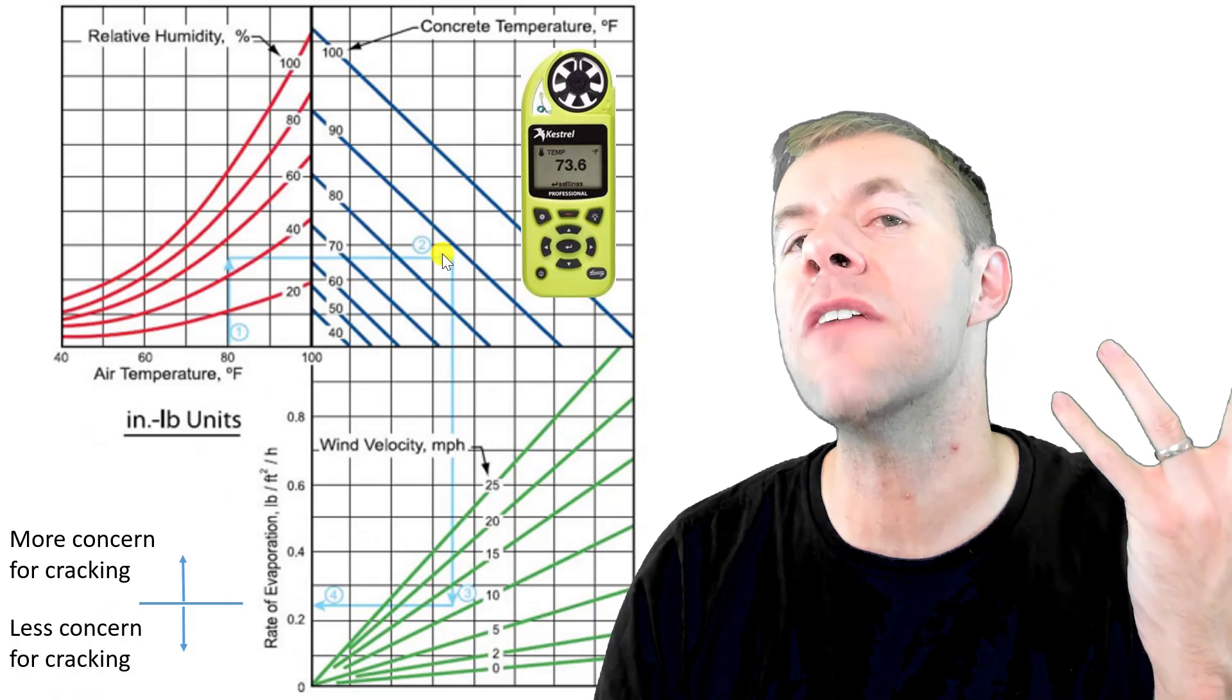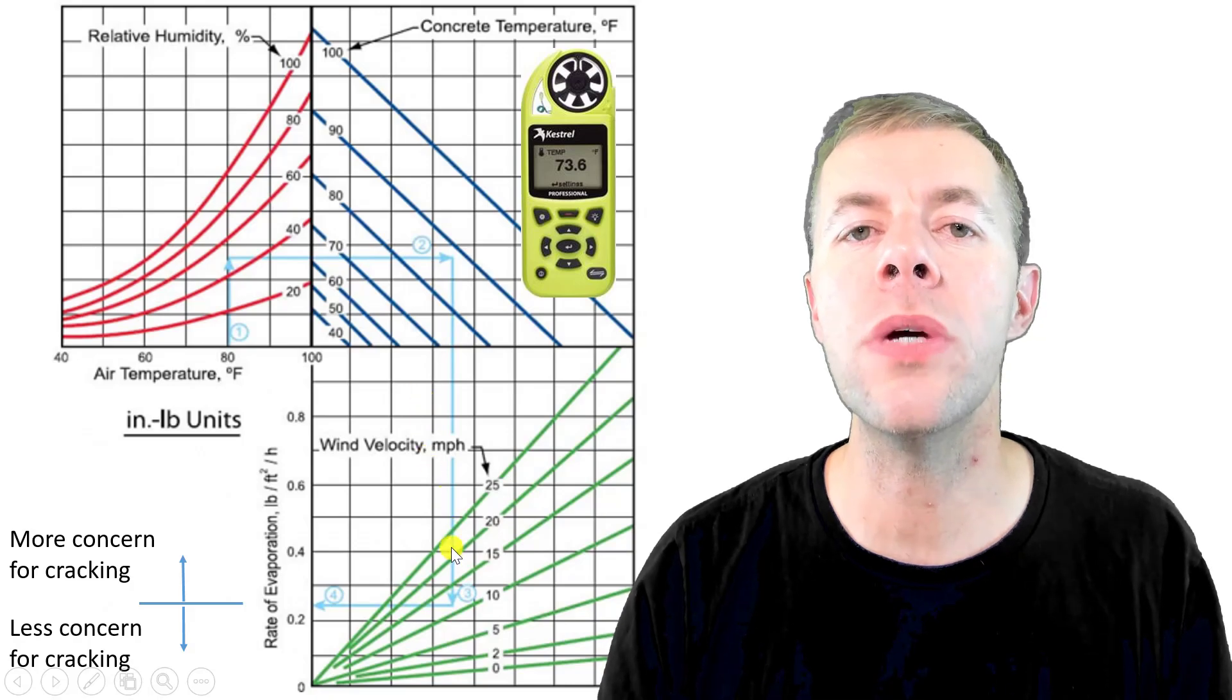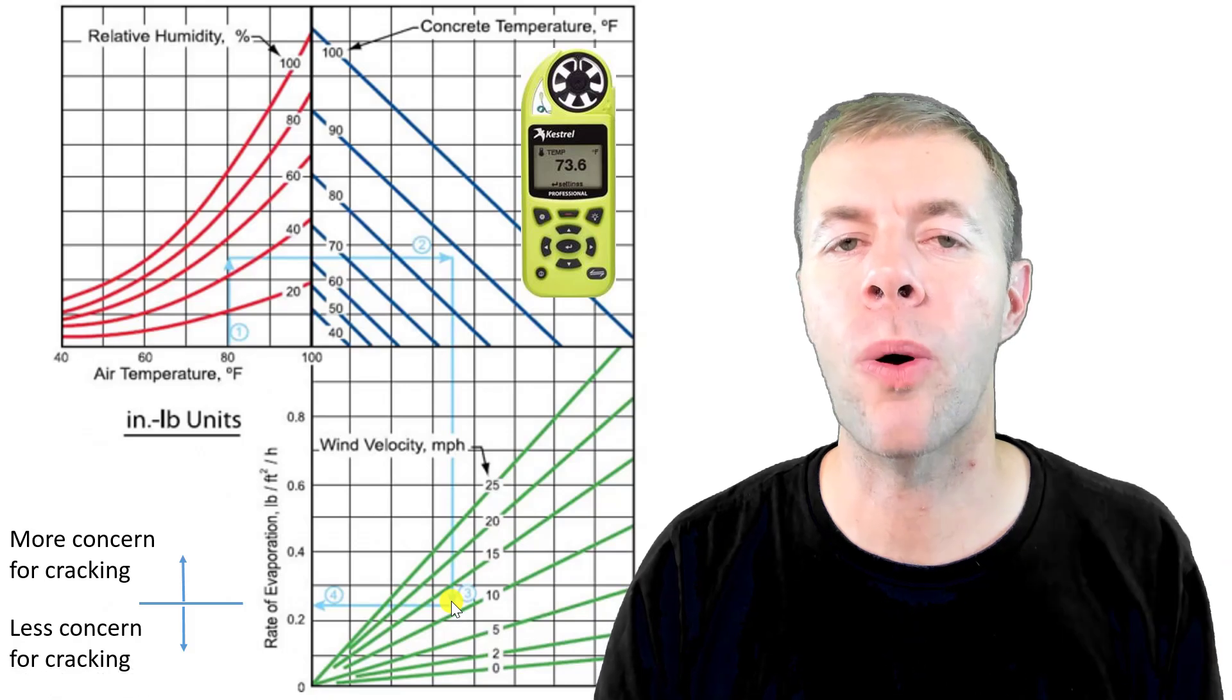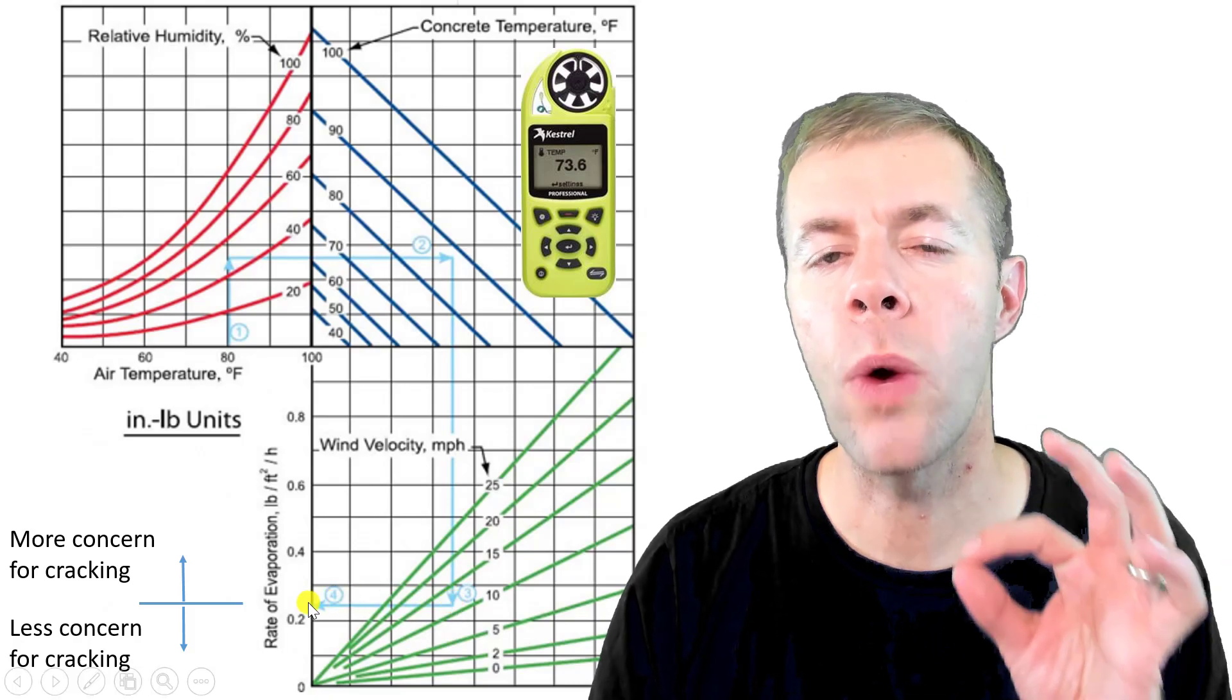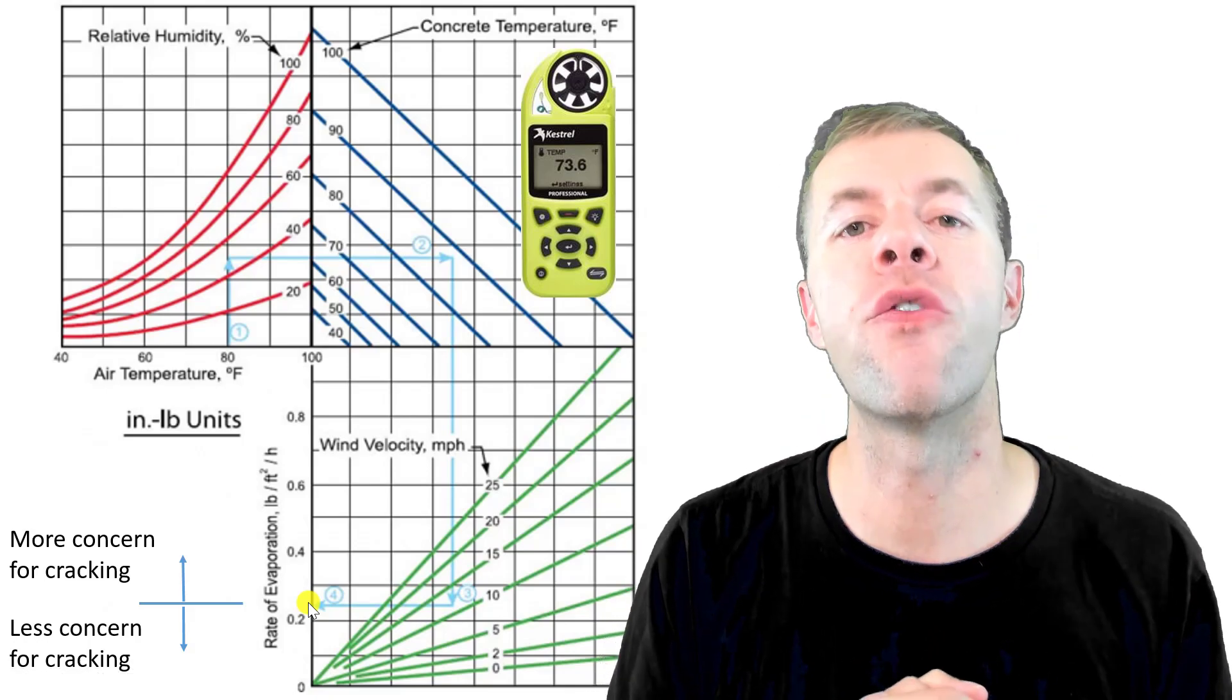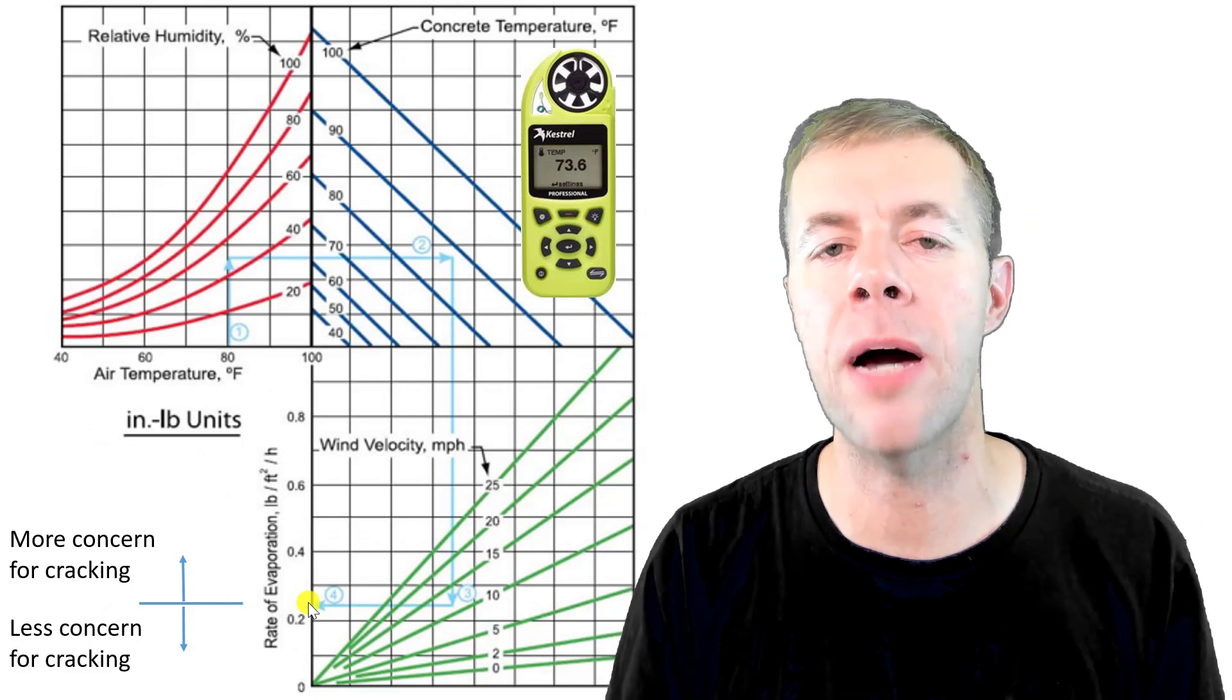Then you come over till you find your concrete temperature. In this example, it's about 85 degrees Fahrenheit. Then you come down until you hit your wind velocity, around 12 miles per hour. Then you come over until you hit something called your rate of evaporation.